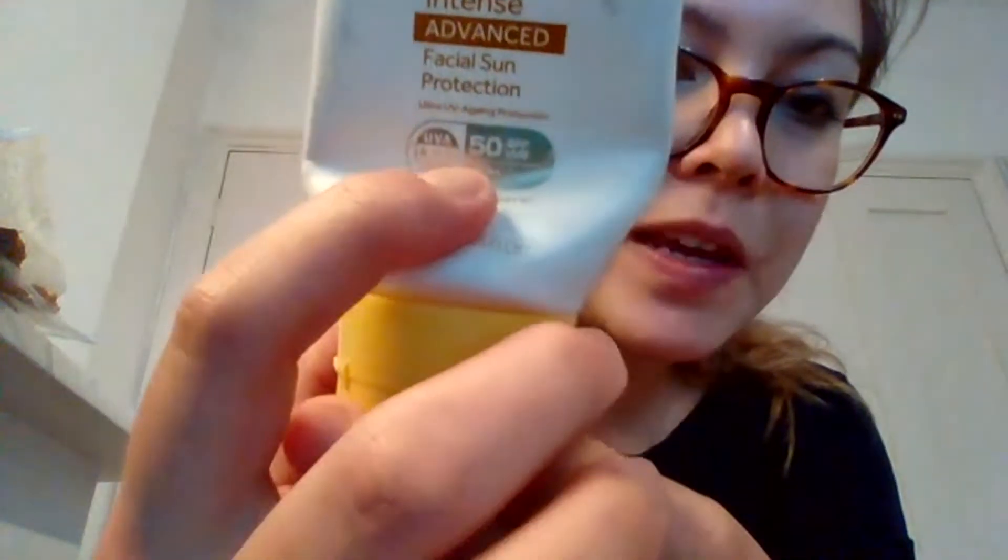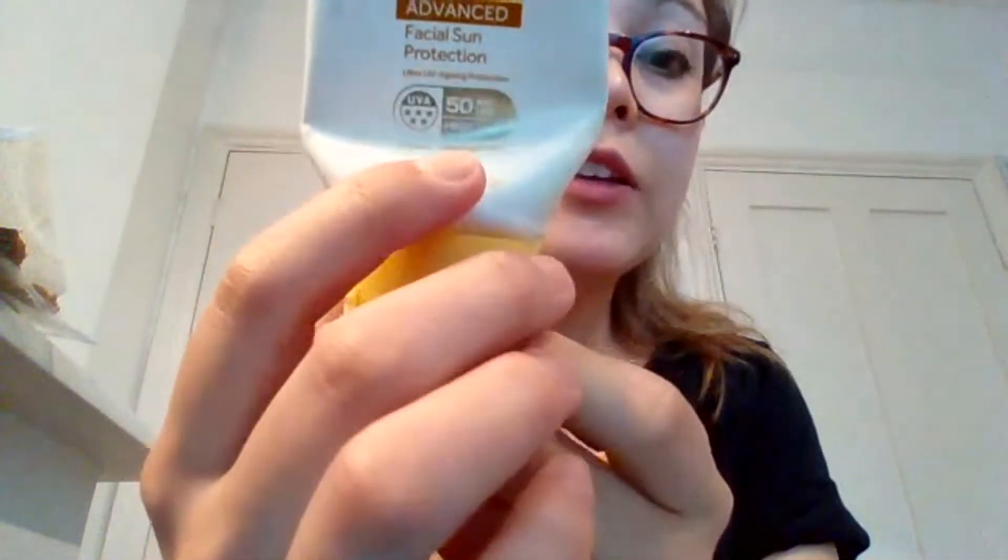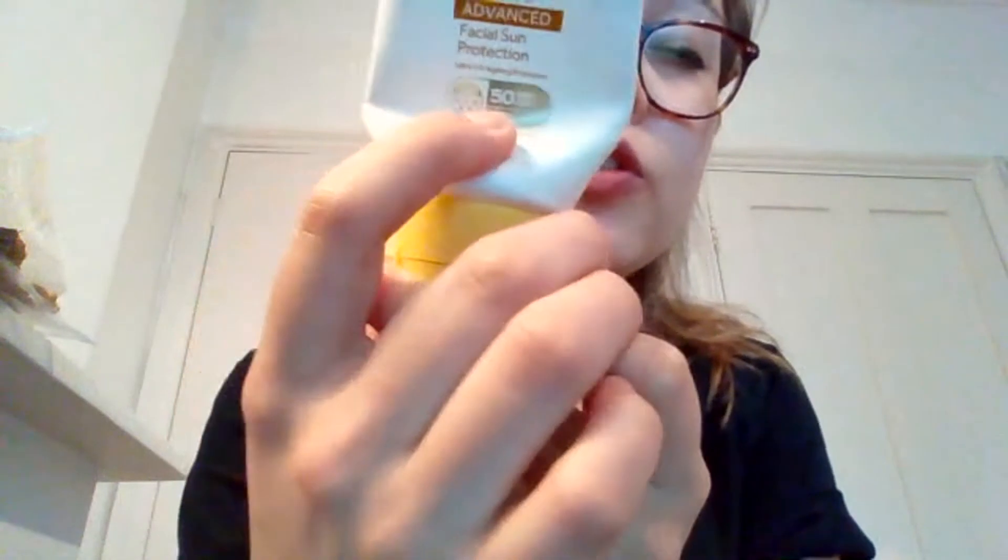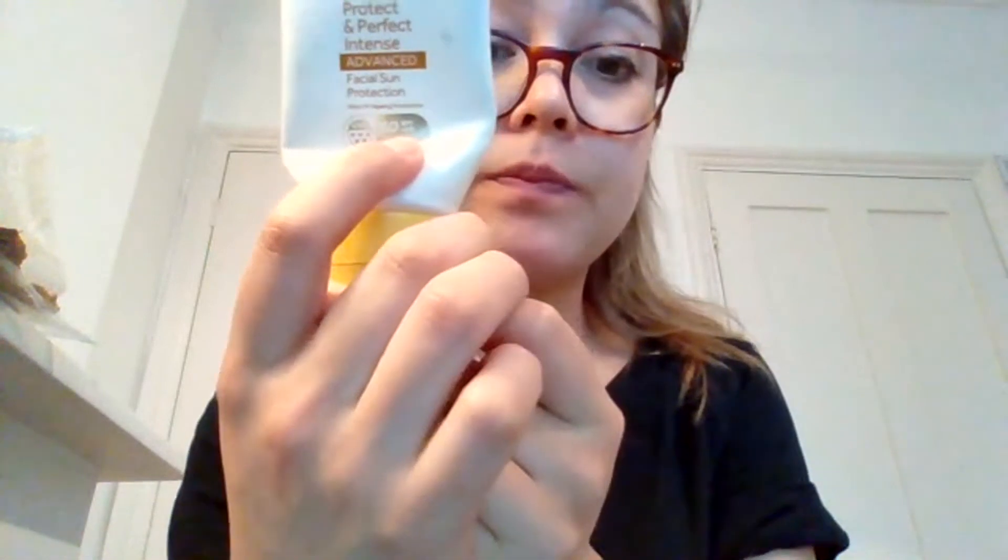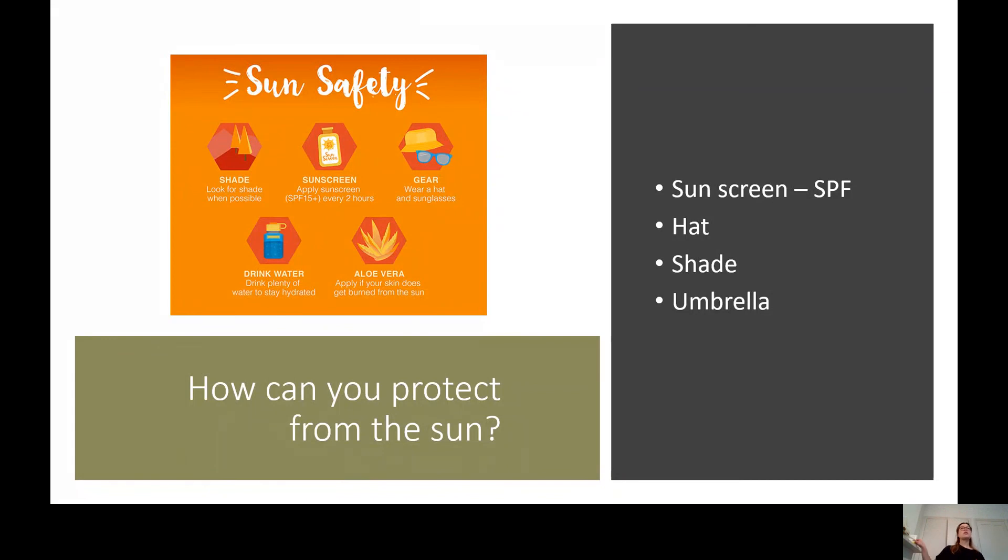So I'm going to come off this for a moment to share screen so that you can see this is a sunscreen and it's got SPF 50. All sun cream will tell you how strong it is. So you should put on a minimum of 30. I usually put on 50 to protect my skin. OK, let's go back to sharing the screen and looking at other ways in which we can protect ourselves from the sun. So you can also wear a hat, sunglasses. Make sure your sunglasses have UV ray protection. Drink plenty of water to stay hydrated. And if you do get burnt, you can put on aloe vera on your skin.